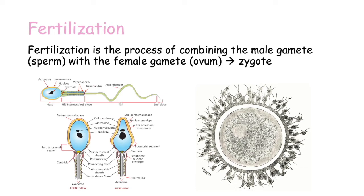Hello everyone and welcome! Today we will be talking about the physiology of fertilization. This is the process of combining the male gamete or the sperm with the female gamete or the ovum, leading to the production of a zygote.